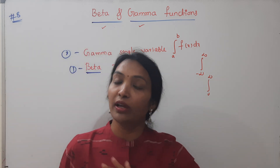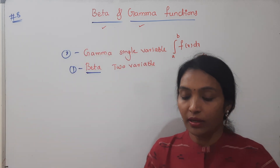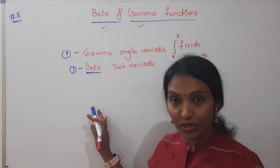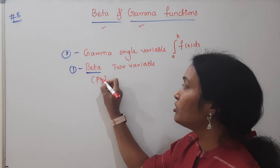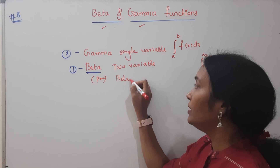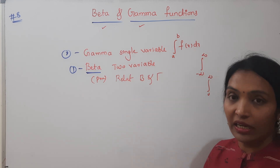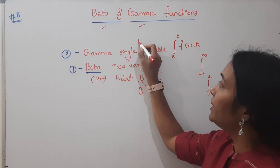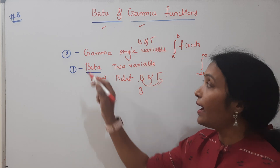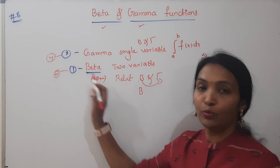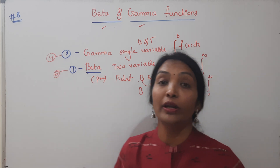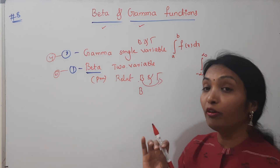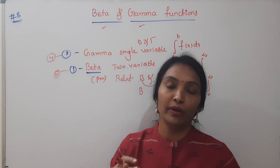We have a relationship between beta and gamma. Gamma is equal to beta and there are relations in beta and in gamma, as well as properties. There are four properties for beta and five to six properties for gamma — these are very important and repeated exam questions. If basics are perfect, you can solve any problem.